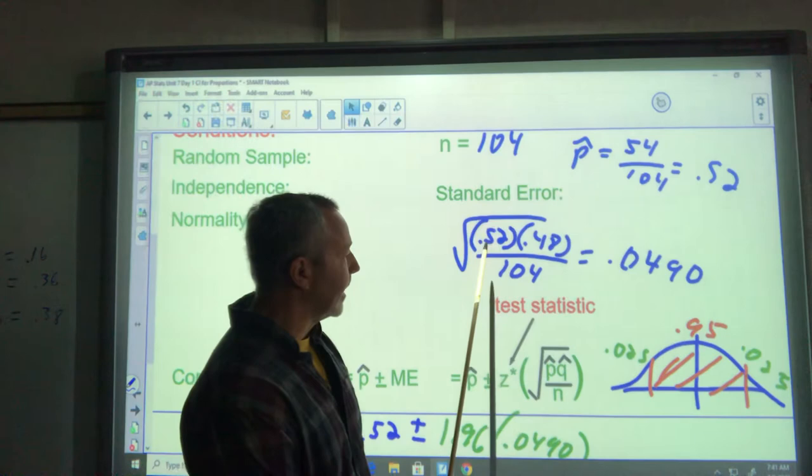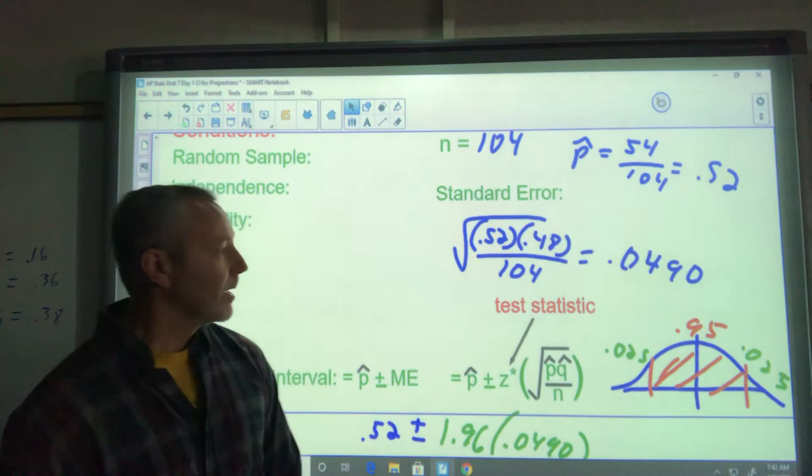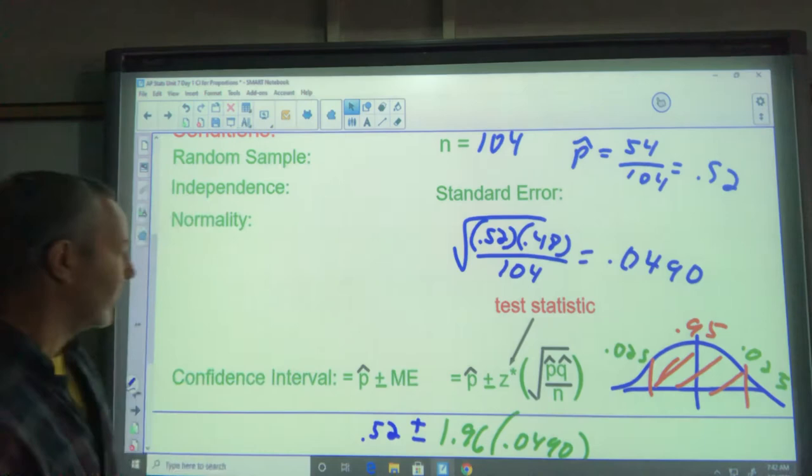We're going to use that for our standard deviation calculation, which is the same. P hat or P times Q over N, but now it's P hat times Q hat. And since it's not from the correct real data, we call it the standard error. And that value is 0.0490. But the calculation is the same, which is great.